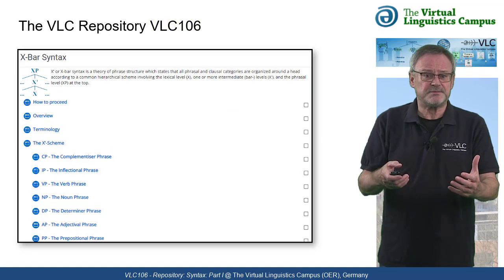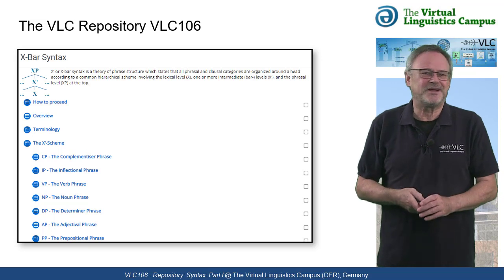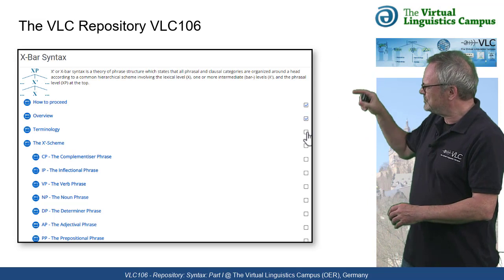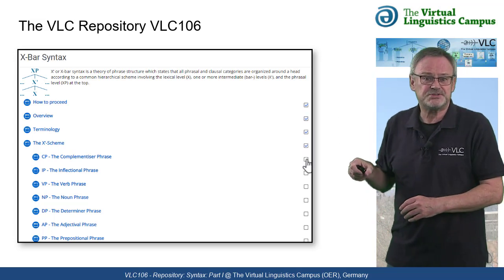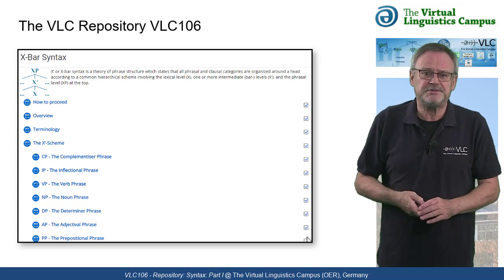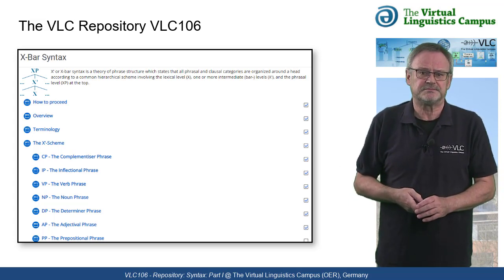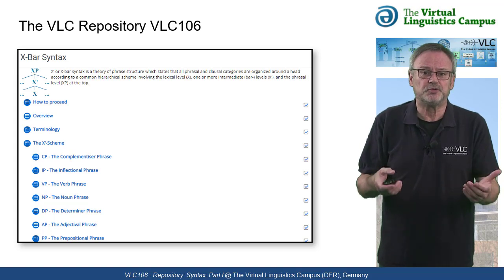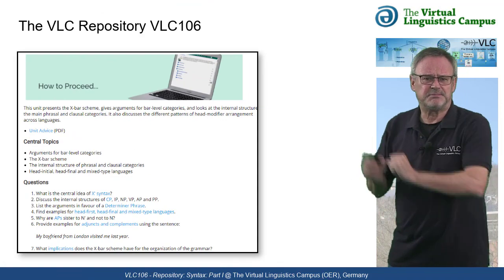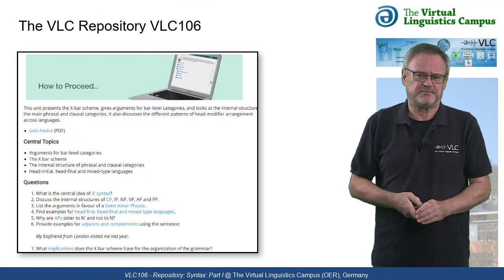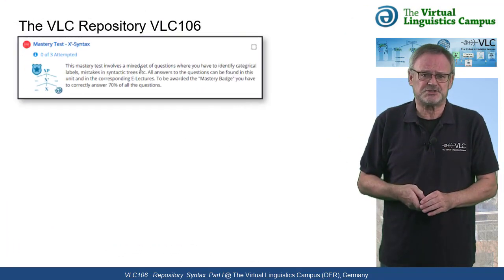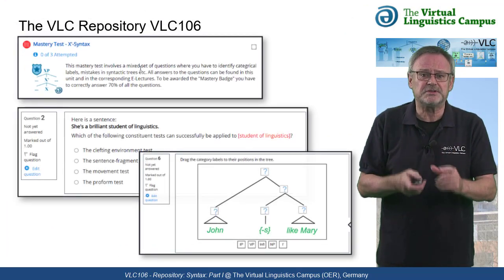And our teaching and learning concept? Studying online on the Virtual Linguistics Campus simply means go through each unit at your own pace, tick off an activity you have worked through, and make use of as many VLC options as possible. If you don't know what to do first, use the how-to-proceed options at the beginning of each unit. Each unit should be finished with a mastery test where you can earn your personal VLC badge.